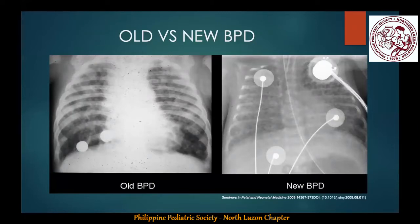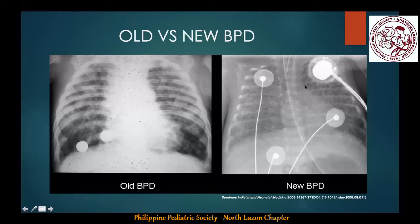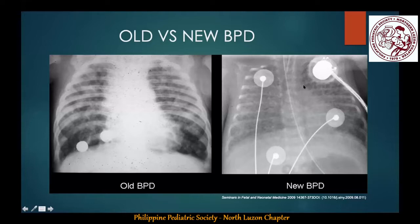A typical x-ray shows the difference between old and new BPD. On the left, old BPD shows areas of atelectasis and hyperinflation in both lung fields. New BPD shows diffuse opacification in both lung fields with a lot of cystic changes very representative of pulmonary interstitial emphysema. BPD is largely a function of extreme prematurity and aggravated by what we do postnatally.